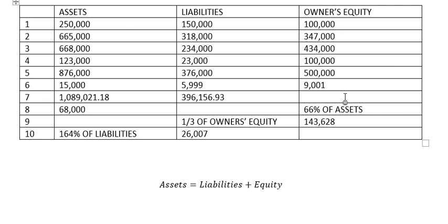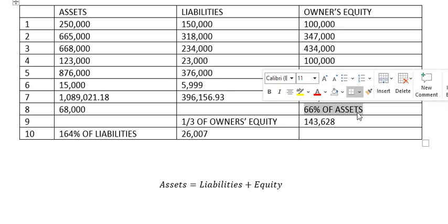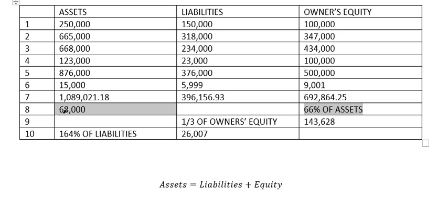...six hundred ninety-two thousand, eight hundred sixty-four point twenty-five. The next one: we have sixty-six percent of Assets, which means we have sixty-eight thousand multiplied by sixty-six percent, and we got about four hundred forty-four thousand, eight hundred eighty.